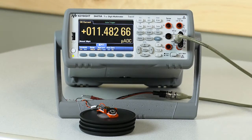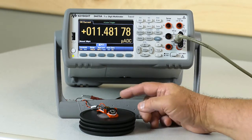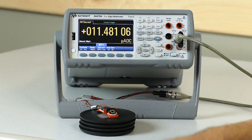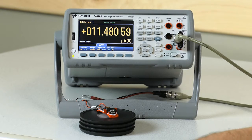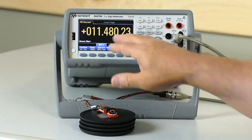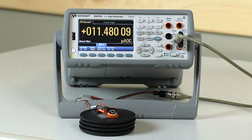Here we have the device under test, in this case a wearable fitness monitor connected to the 34470 digital multimeter in a conventional mode. We can measure the resting current at 11.4 microamps.